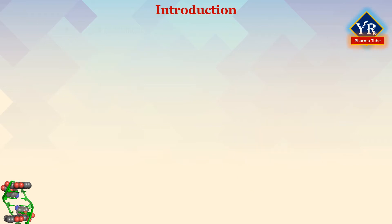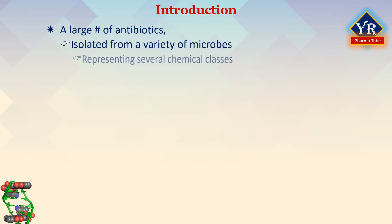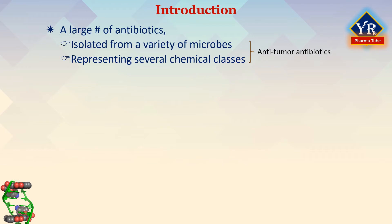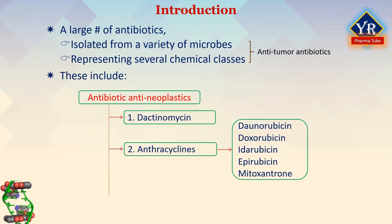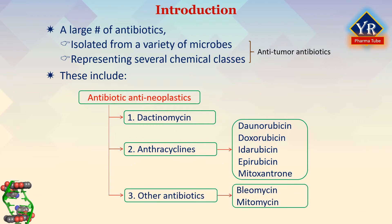A large number of antibiotics isolated from a variety of microbes and representing several chemical classes are very effective in the treatment of cancer and are collectively known as the anti-tumor antibiotics. These include dactinomycin, anthracyclines such as doxorubicin and danorubicin, the analogues idarubicin and epirubicin, and the related anthracene derivative mitoxantrone. Other anti-tumor antibiotics include bleomycin and mitomycin.